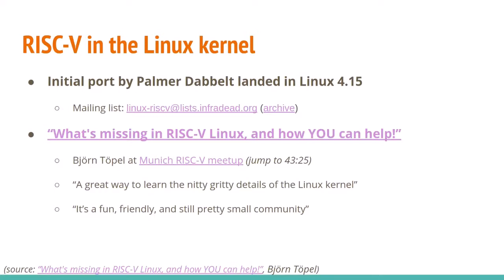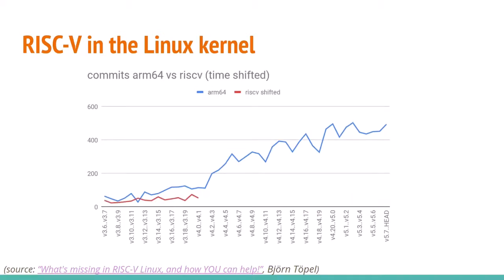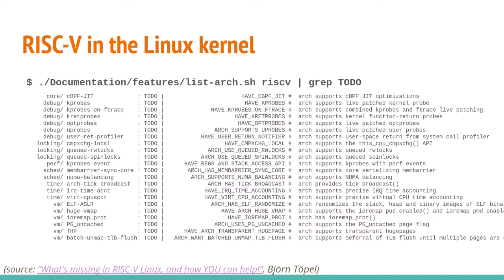A great talk from Bjorn Topol at the Munich RISC-V meetup covered what's currently missing in RISC-V Linux and how to help. Because it's a newer port, it's a great way to learn the nitty-gritty details of the Linux kernel in a fun, friendly, and still relatively small community. He generated graphs comparing commit counts between ARM64, ARC64, RISC-V, and others — RISC-V started in 4.14 far below ARM64, but when adjusted for starting points, it may be keeping pace if more people get involved. He also shared a script you can run in the kernel source directory to see all architecture features still missing for RISC-V.